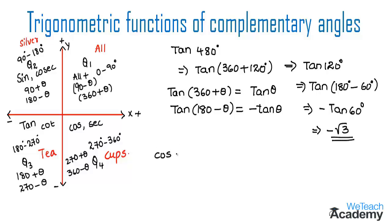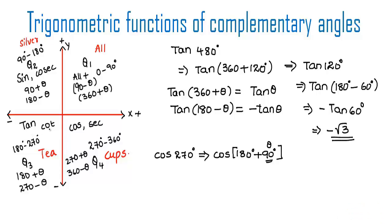Now let us find the value of cos 270 degrees. Write cos 270 as cos 180 plus 90 degrees, in the form cos 180 plus theta. Since 180 plus theta lies in quadrant 3 where cos is negative, and 180 is even so cos remains cos, we get minus cos 90 degrees. The value of cos 90 degrees is 0, so the result is minus 0, which is 0. This was a basic introduction to trigonometric functions of complementary angles.